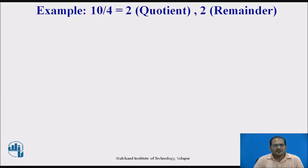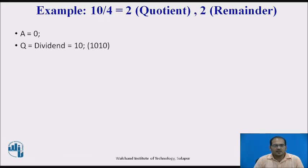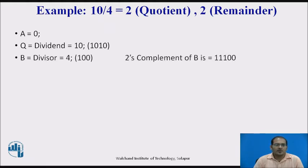Let us see an example: 10 divided by 4 using the restoring method. As we know, the quotient is 2 and the remainder is 2. For initialization, A is set to 0, Q contains the dividend value — in our case 101010 — and B contains the divisor value 4, which is 100 in binary. The 2's complement of B is 11100, which is required for the restoring method.